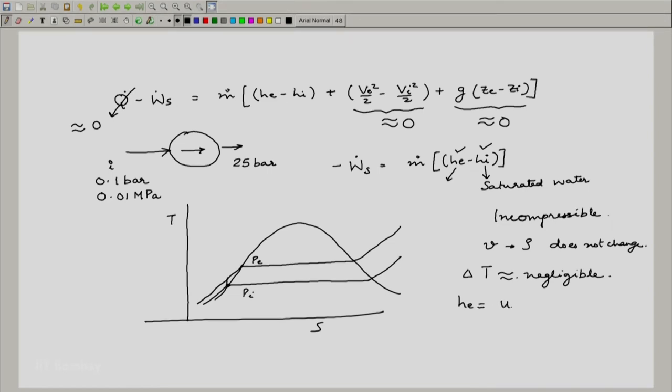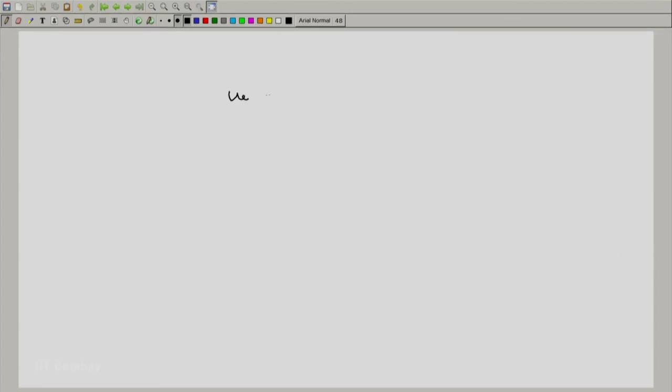In which case we just write down: hₑ = uₑ + pₑvₑ, hᵢ = uᵢ + pᵢvᵢ. And if T does not change much, then if I subtract hₑ - hᵢ, I will get uₑ - uᵢ + pₑvₑ - pᵢvᵢ. And what we have is Tₑ = Tᵢ by our assumption, and hₑ - hᵢ will be just pₑvₑ - pᵢvᵢ.